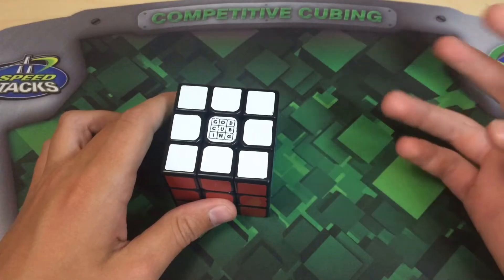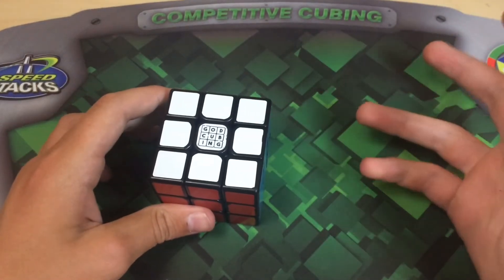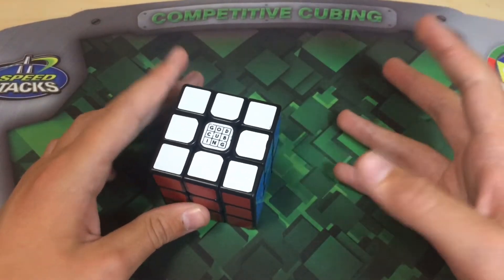This method works really well, but here are some extra tips and tricks that'll make it work even better. Tip number one is to scramble the cube with a different orientation each time, that way you get more random scrambles. Instead of just scrambling the cube with white on top and green on front like you always do, you might want to try maybe putting blue on top and red on front, that way you get more random scrambles.